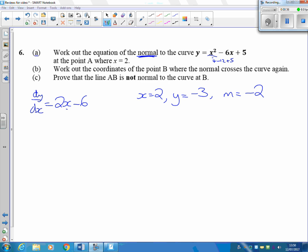What do we know? We want a normal, so we actually want the gradient of the normal, which is going to be a half, the negative reciprocal of that. So the normal is going to be y take away this y number equals gradient x take away the x number.